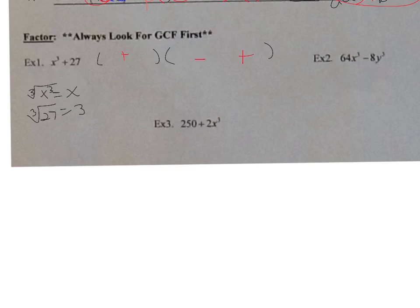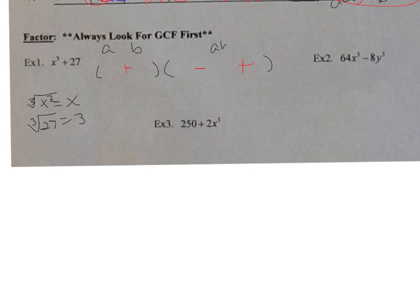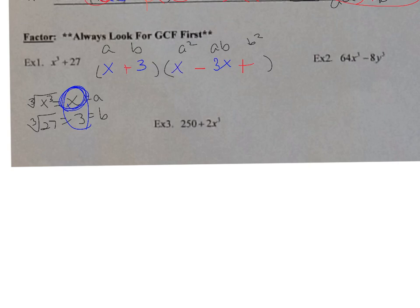A is x, B is 3. In the small parenthesis: x and 3. In the large parenthesis: middle is A×B = 3x, front is A² = x², end is B² = 3² = 9. You can't leave it as 3² — write it as 9. Final answer: (x+3)(x²−3x+9).